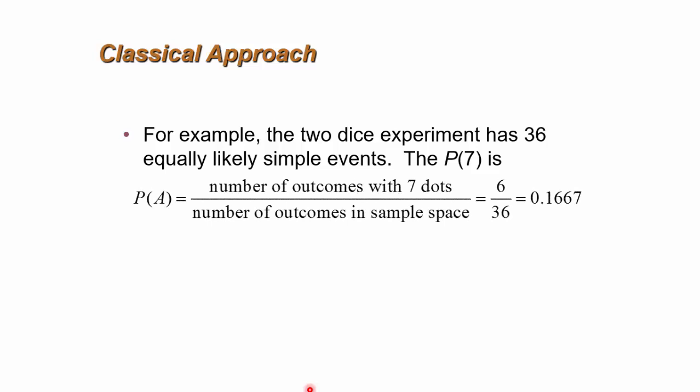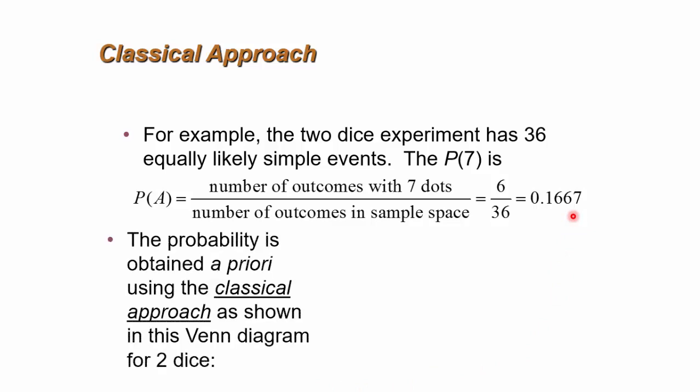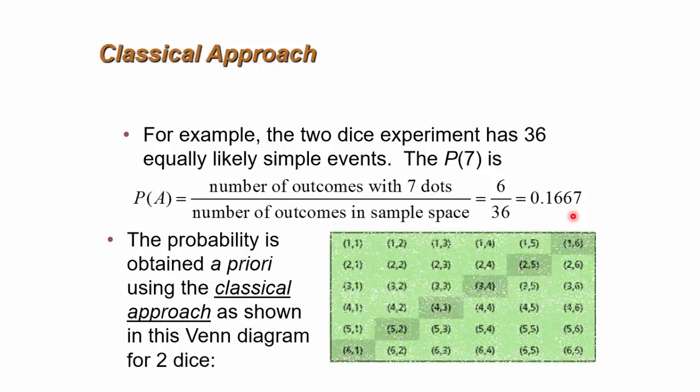There are six different ways you can get seven: 1,6; 2,5; 3,4; 4,3; 5,2; 6,1. So there are six different ways of getting a 7, 36 possibilities, and hence that's about 16% chance of getting a seven. Now these probabilities are calculated a priori, and such calculations are normally called classical approaches.